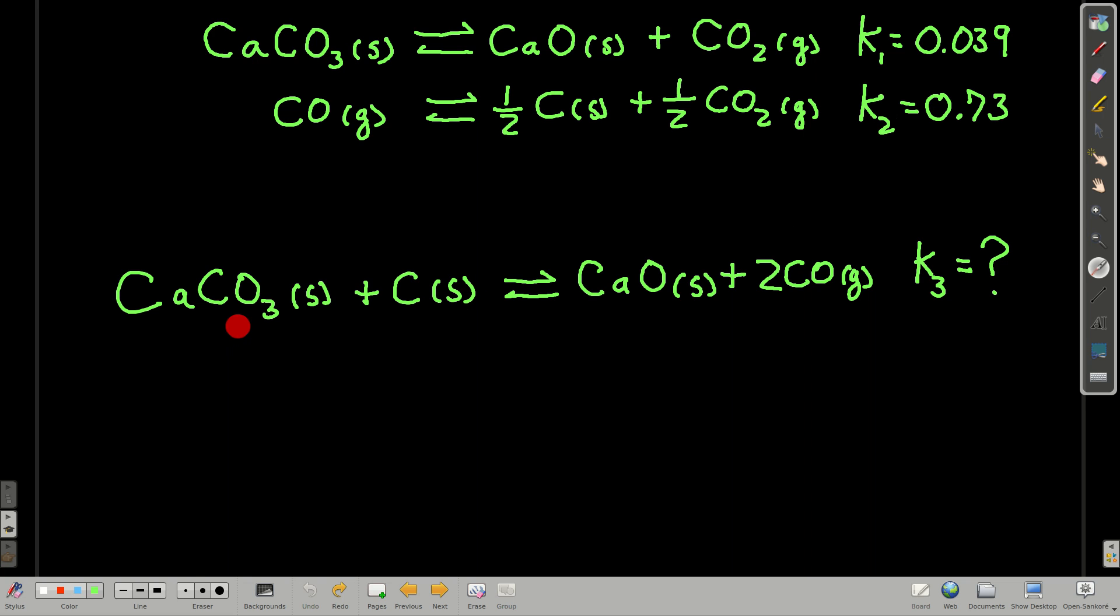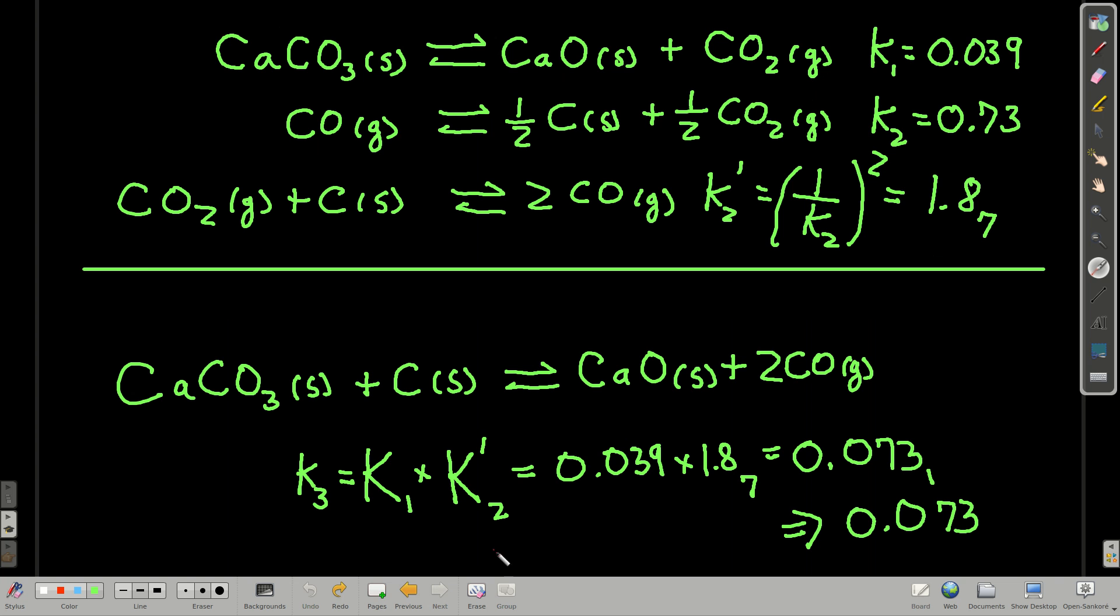Well, calcium carbonate's here and it's here. So I think we're going to leave this one alone. But here, we want, let me see. We want one carbon solid on the left. Here, carbon solid's on the right with the one half. We want two carbon monoxides on the right. Here, there's one on the left. So I think we're going to flip this and multiply it by two. So if we flip this and multiply it by two, we get this. Multiplied everything by two and flipped it around. By the way, when we flip this, we inverted the K for the original reaction. We multiply it by two, so we raise this K to the second power.